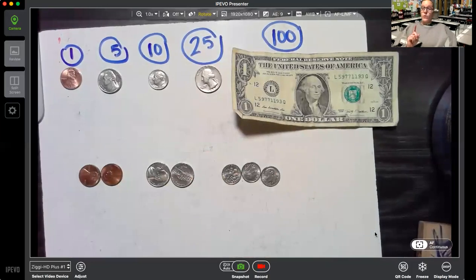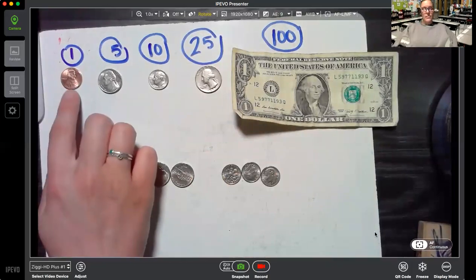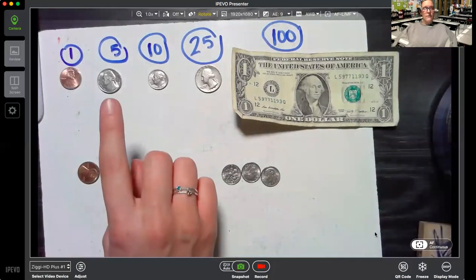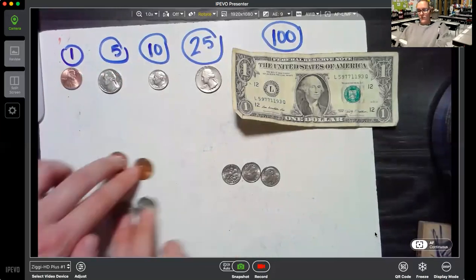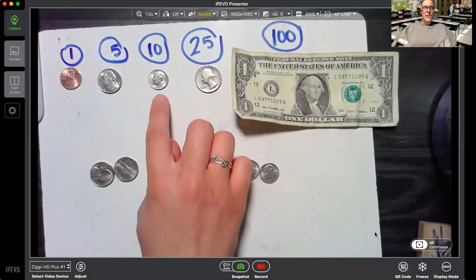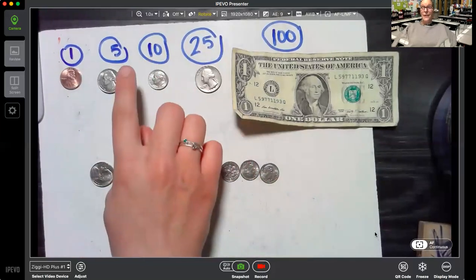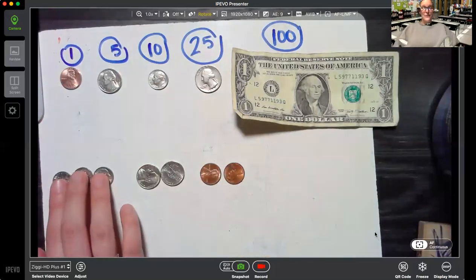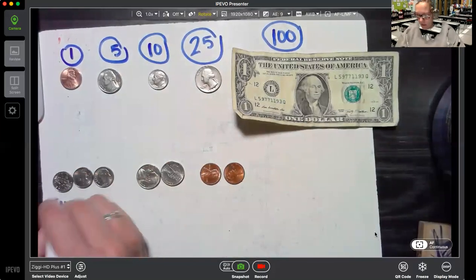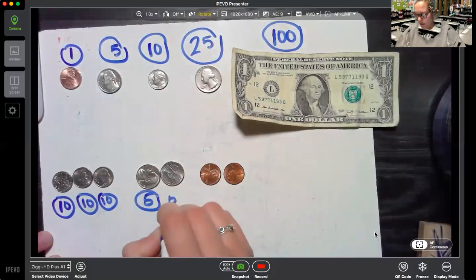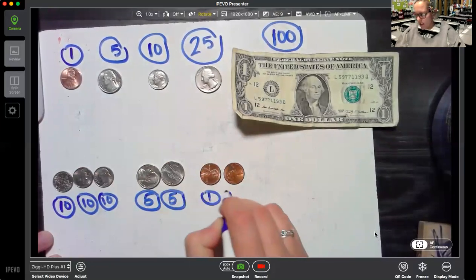Next, put them in order from the coins that are worth the greatest to least. So I have pennies here. They're worth one. Probably not going to start there. Now I have nickels. Nickels are worth five. Five is bigger than one. So let's flip-flop. And here I have dimes. Dimes are worth ten, which is bigger than five and bigger than one. So they hop the line and be first. I'm going to write how much they are worth below it. I like to circle them because it looks like a coin.